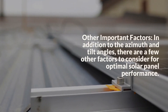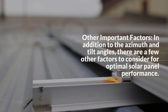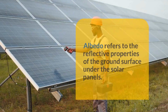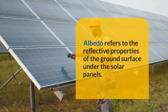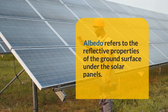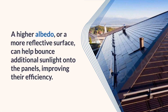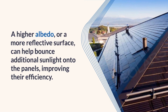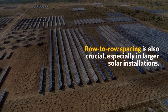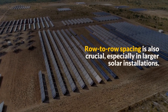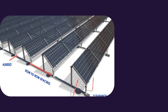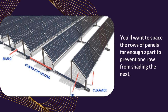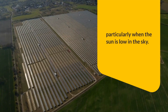Other Important Factors. In addition to the Azimuth and Tilt Angles, there are a few other factors to consider for optimal solar panel performance. Albedo refers to the reflective properties of the ground surface under the solar panels. A higher albedo, or a more reflective surface, can help bounce additional sunlight onto the panels, improving their efficiency. Row-to-row spacing is also crucial, especially in larger solar installations. You'll want to space the rows of panels far enough apart to prevent one row from shading the next, particularly when the sun is low in the sky.